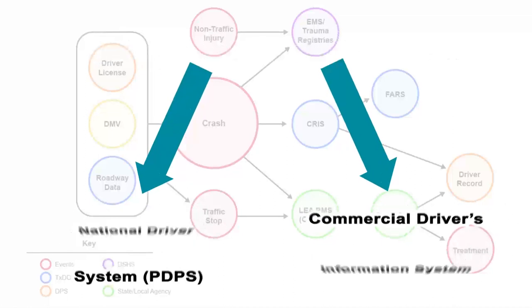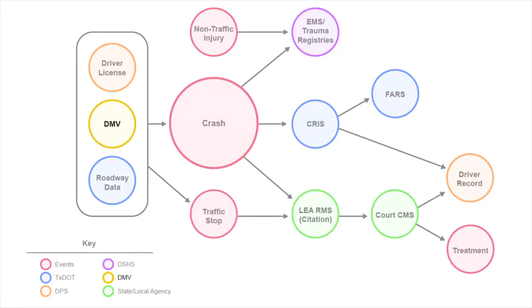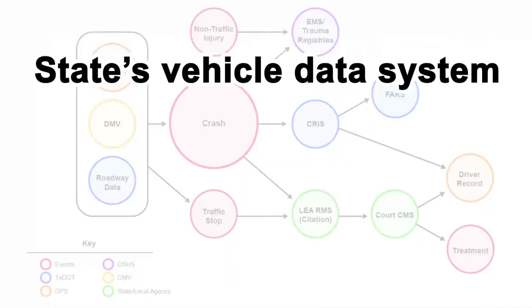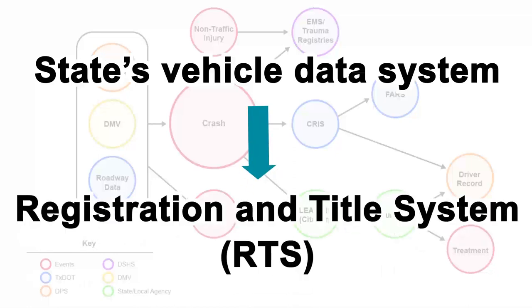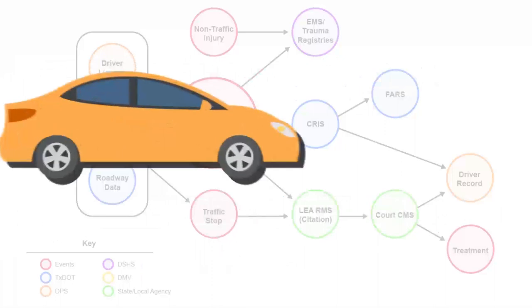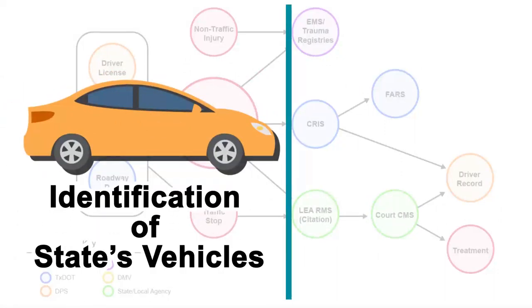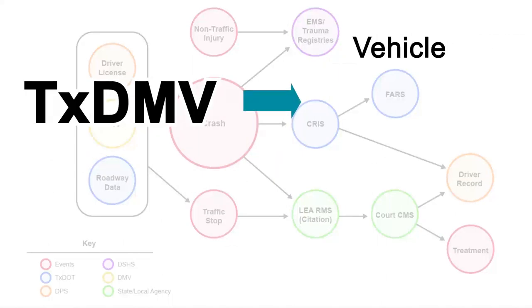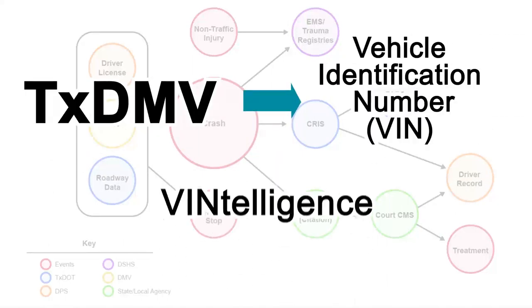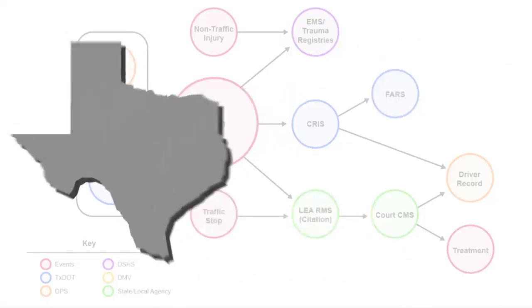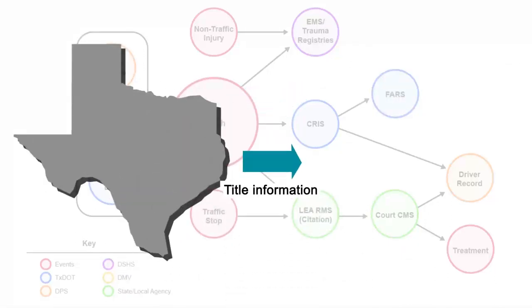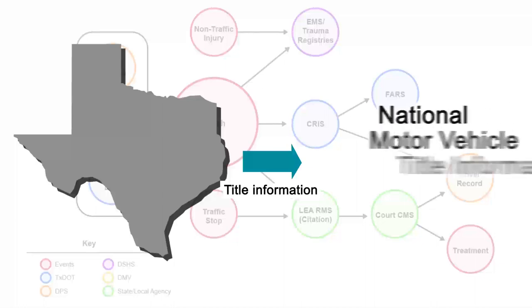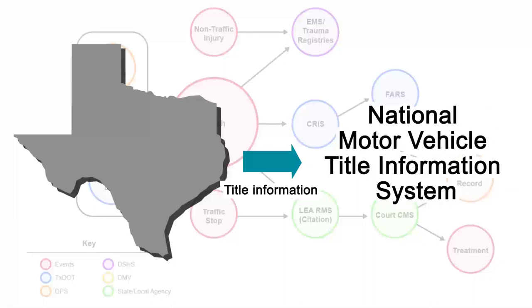The Texas Department of Motor Vehicles has custodial responsibility for the state's vehicle data system that maintains all vehicle title and registration records in the registration and title system. Critical information related to ownership and identification of the state's vehicle, such as vehicle make, model, year of manufacture, body type, and title brands, is stored in RTS. TxDMV validates every vehicle identification number via the Vintelligence verification software. The state provides title information for original Texas titles and salvage and non-repairable titles to the National Motor Vehicle Title Information System, which ensures you have accurate vehicle information during traffic encounters.